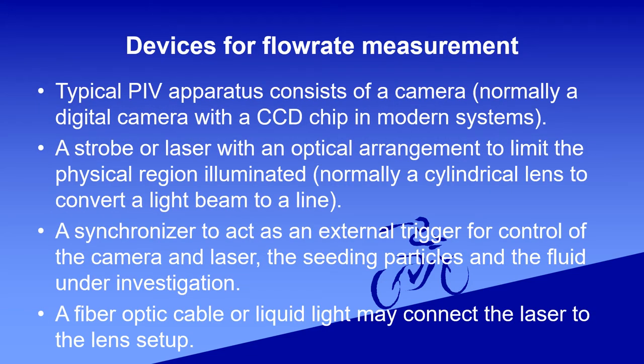The disadvantages of PIV are: it requires proper selection of particles, the size of flow searches are limited, and it is a costly device for flow measurement. A typical PIV apparatus consists of a camera, a strobe or laser with an optical arrangement to limit the physical region illuminated, and a synchronizer to act as an external trigger for control of the camera.